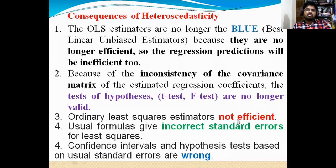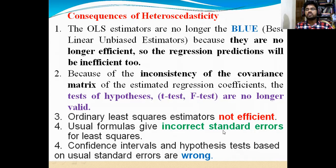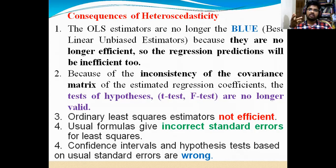Third: ordinary least squares estimators are not efficient. OLS — nothing but Ordinary Least Squares estimators — not efficient. When you are applying the OLS method for regression, we will not get efficient values in the parameters. The usual formulas give incorrect standard errors for the least squares. When you are using different formulas, you will get incorrect standard error values — nothing but the standard error of beta 2, beta 3, beta 4. Whatever standard error values you get for beta 2 or beta 3, you will get wrong values, because when you are applying different formulas to get the T values.